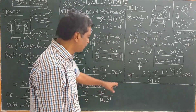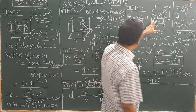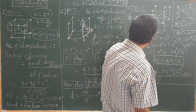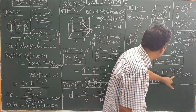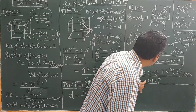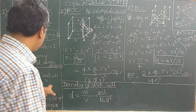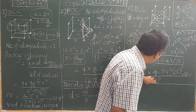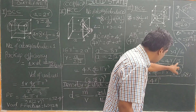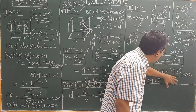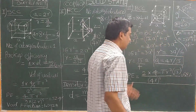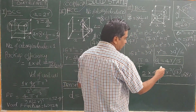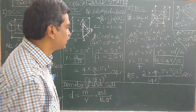For BCC, the number of atoms Z equals 8 times (1/8) plus 1 (body center atom belongs entirely to the unit cell), giving Z equals 2. Packing efficiency equals 2 times (4/3)πR³ divided by A³, where A equals 4R/√3. Therefore, the packing efficiency is 68%, and the void fraction is 32%.